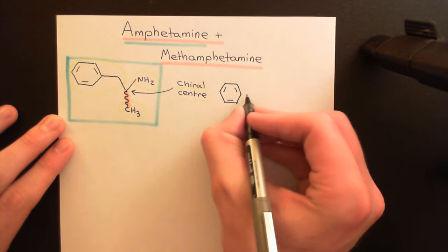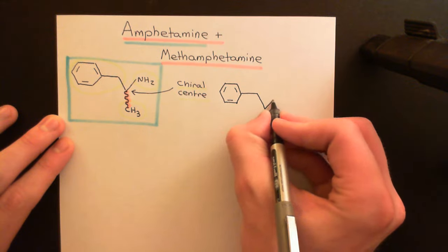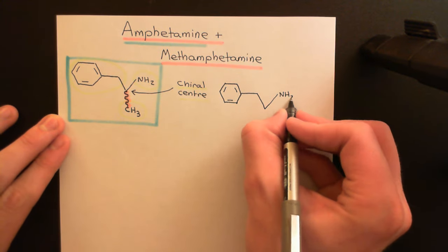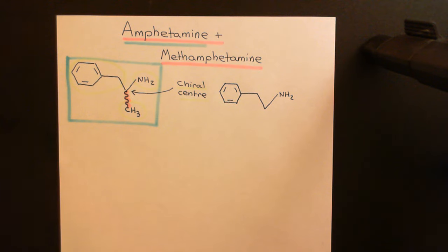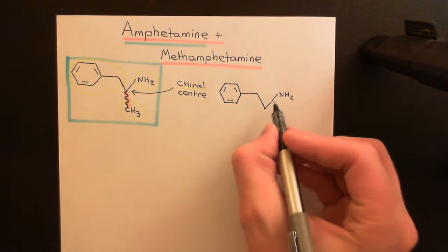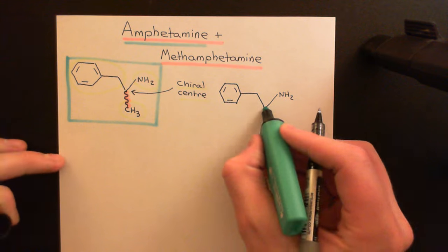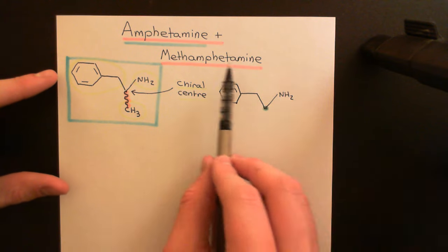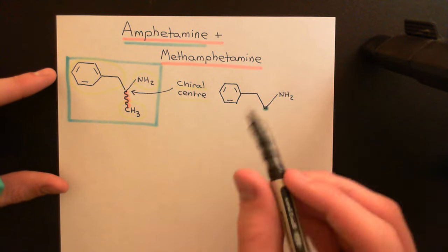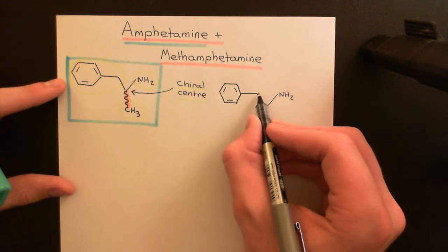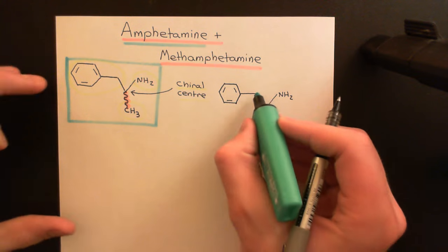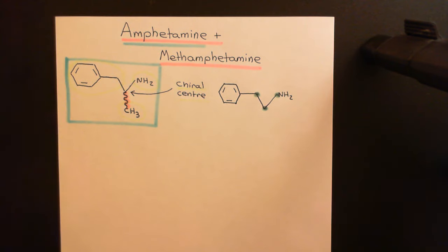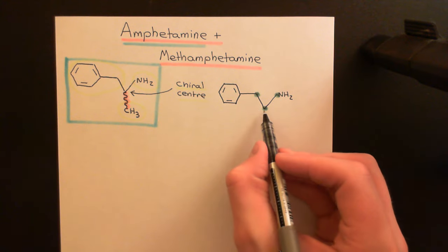Here is the benzene ring of the amphetamine structure, the methylene group, the chiral centre, and the amino group. To understand why this carbon with four different groups gives rise to two different forms of the molecule: let's imagine that the chiral carbon is sitting in the plane of the piece of paper, and that the amino group and the carbon of the methylene group are also sitting in the plane of the paper.